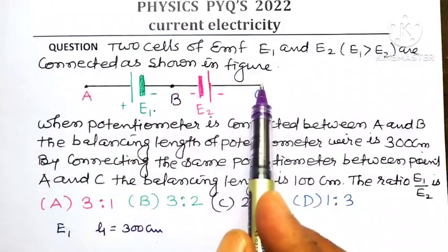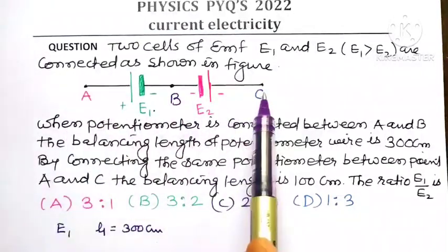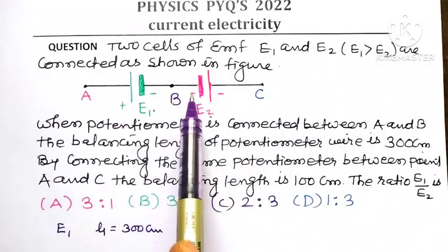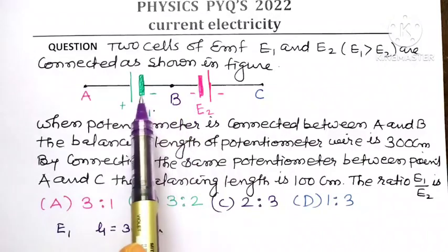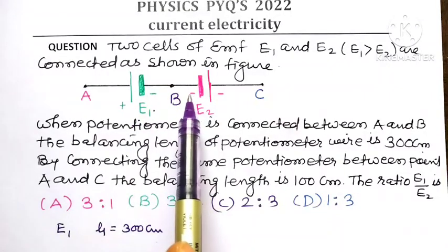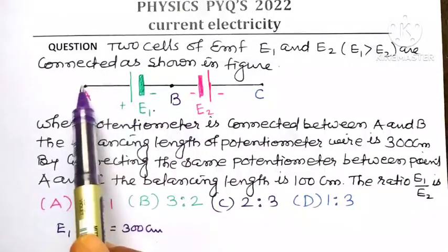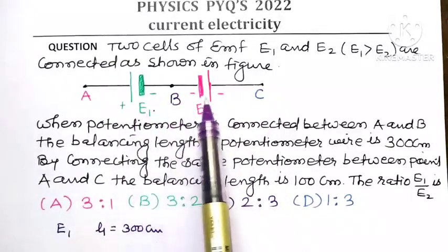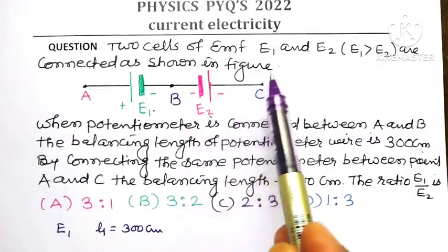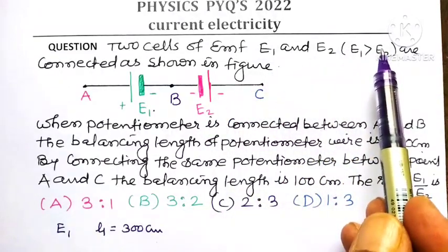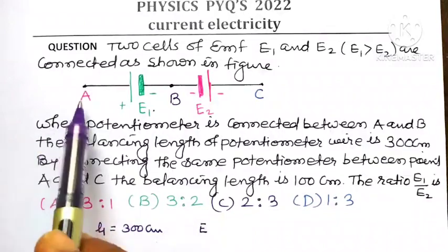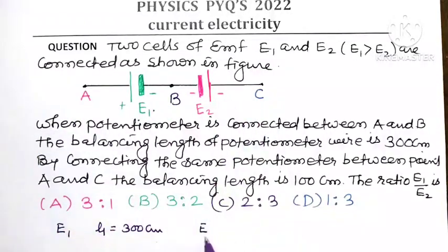This is point A and this is point C. Between point A and C, two cells are connected in such a manner that their negative terminals are made common, meaning the EMF of the two cells oppose each other. So the net EMF between point A and C is the difference of the EMF of the two cells. Since E1 is greater than E2, the net EMF between A and C is E1 minus E2.